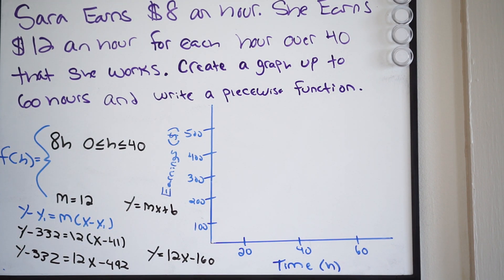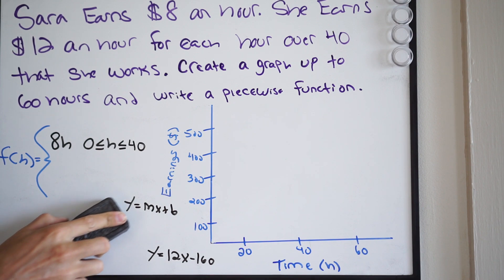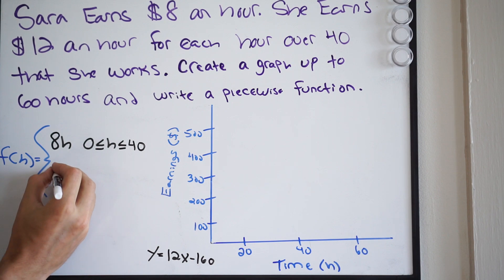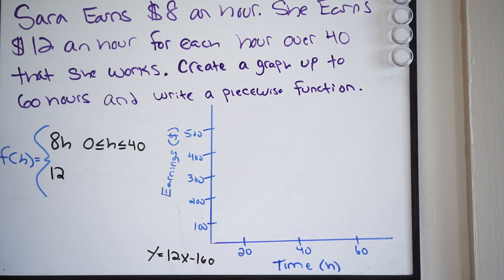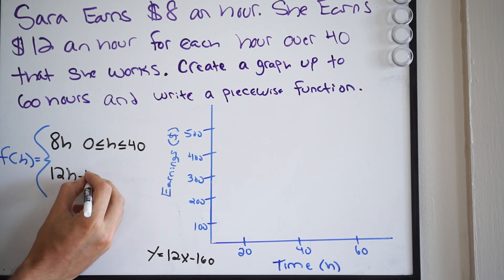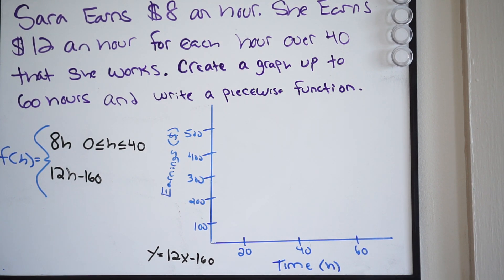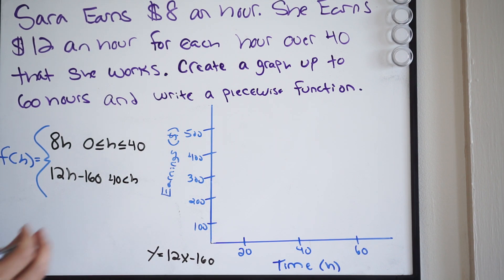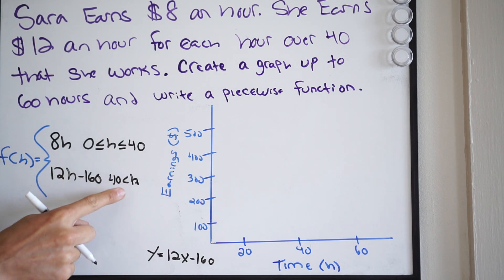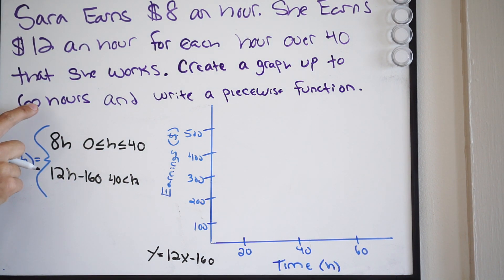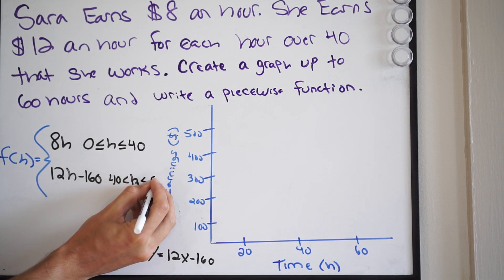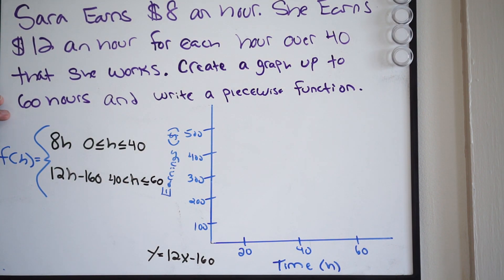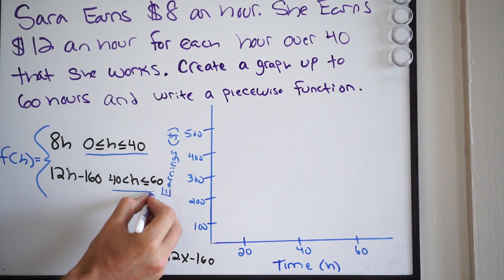We're going to write that as 12H minus 160, since we're using H for hours. Now let's write the rule. H has to be greater than 40 — because the first piece is equal to 40 — and less than or equal to 60, since that's the maximum they want us to go to. That completes our piecewise function with both rules.